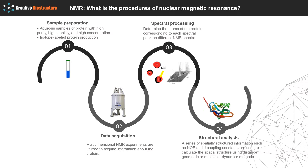Next, multi-dimensional NMR experiments are utilized to acquire information about the protein. Spectral processing is then performed to determine the atoms of the protein corresponding to each spectral peak on different NMR spectra. Finally, a series of spatially structured information such as NOE and J coupling constants are used to calculate the spatial structure using distance geometric or molecular dynamics methods.